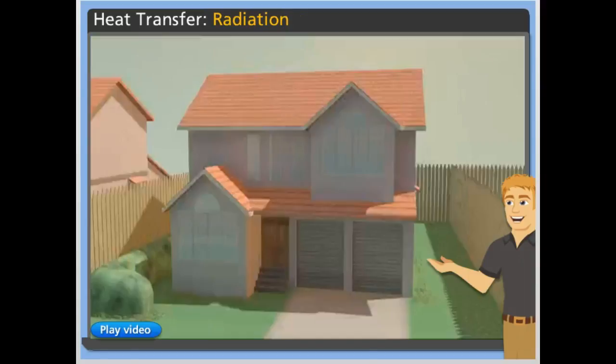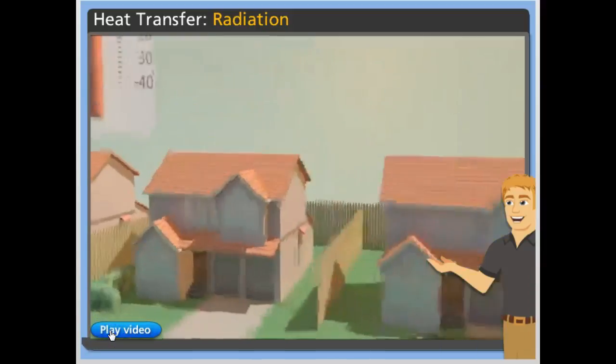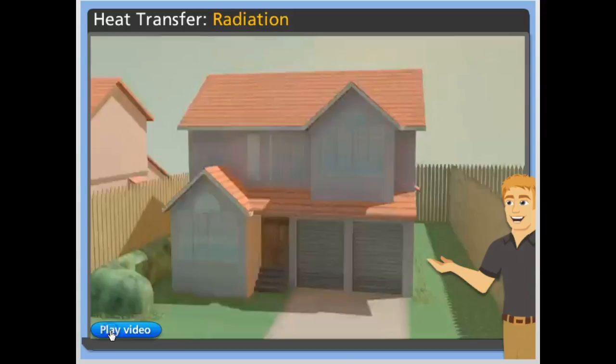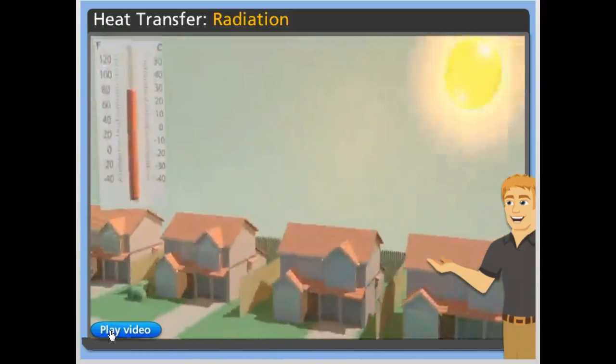When electromagnetic waves travel through space, it is called radiation. When electromagnetic waves come in contact with an object, the waves transfer the heat to that object. Electromagnetic waves travel through empty space. The Sun warms the Earth through the radiation of electromagnetic waves.